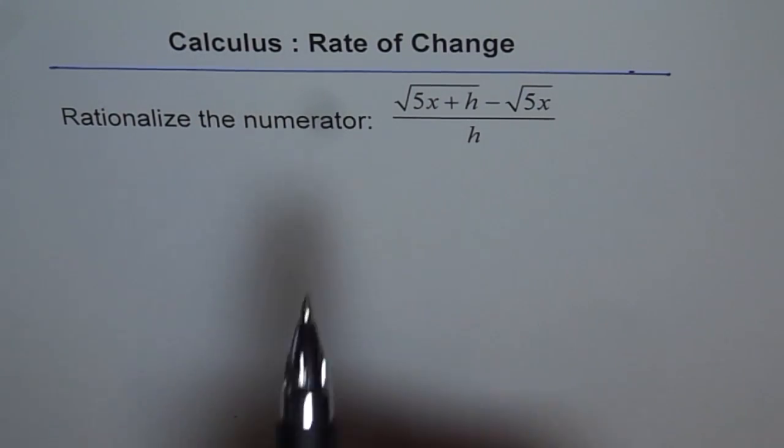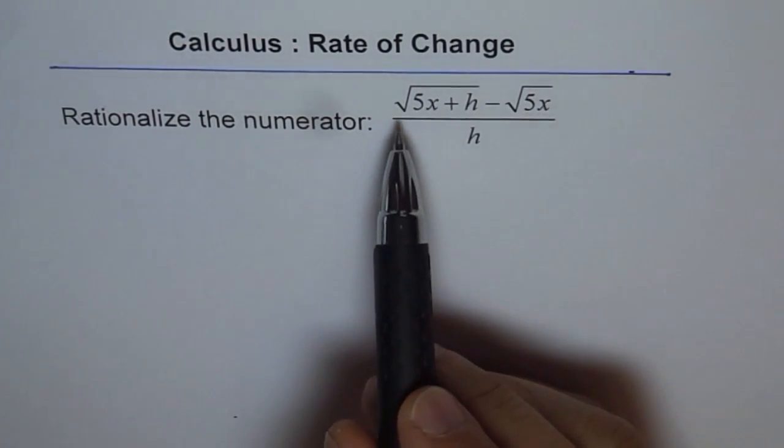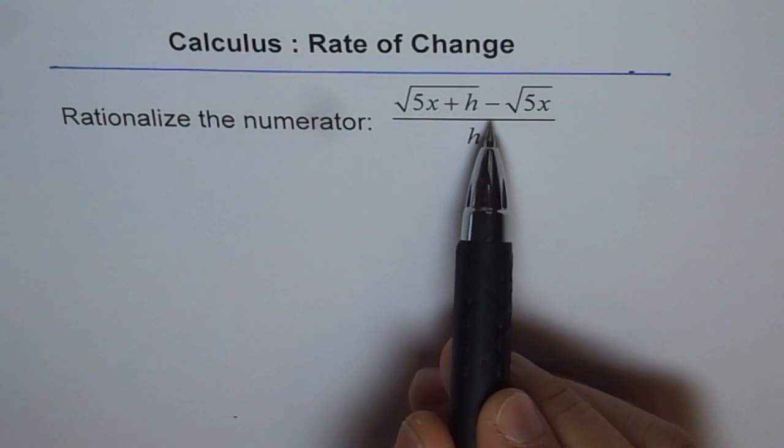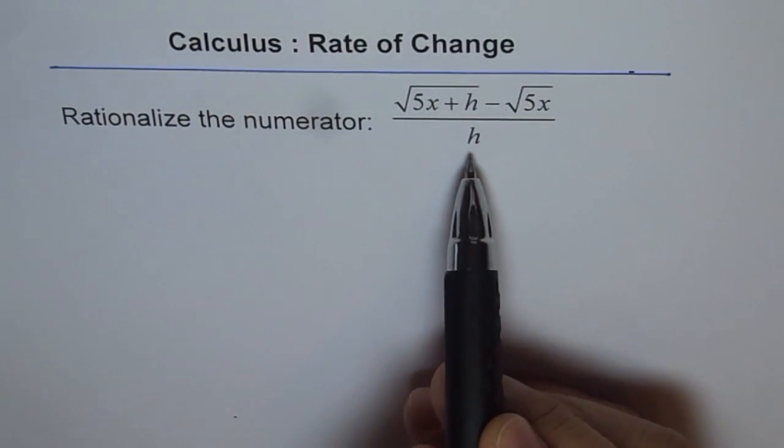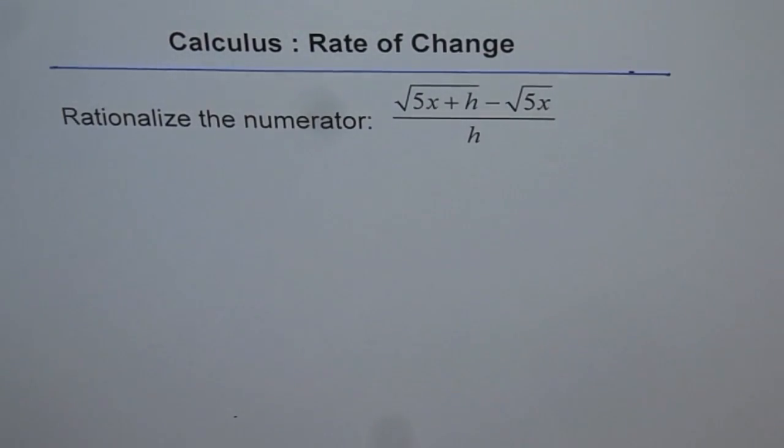So we need to rationalize the numerator, where we are given square root of 5x plus h minus square root of 5x divided by h. So that is the given question.